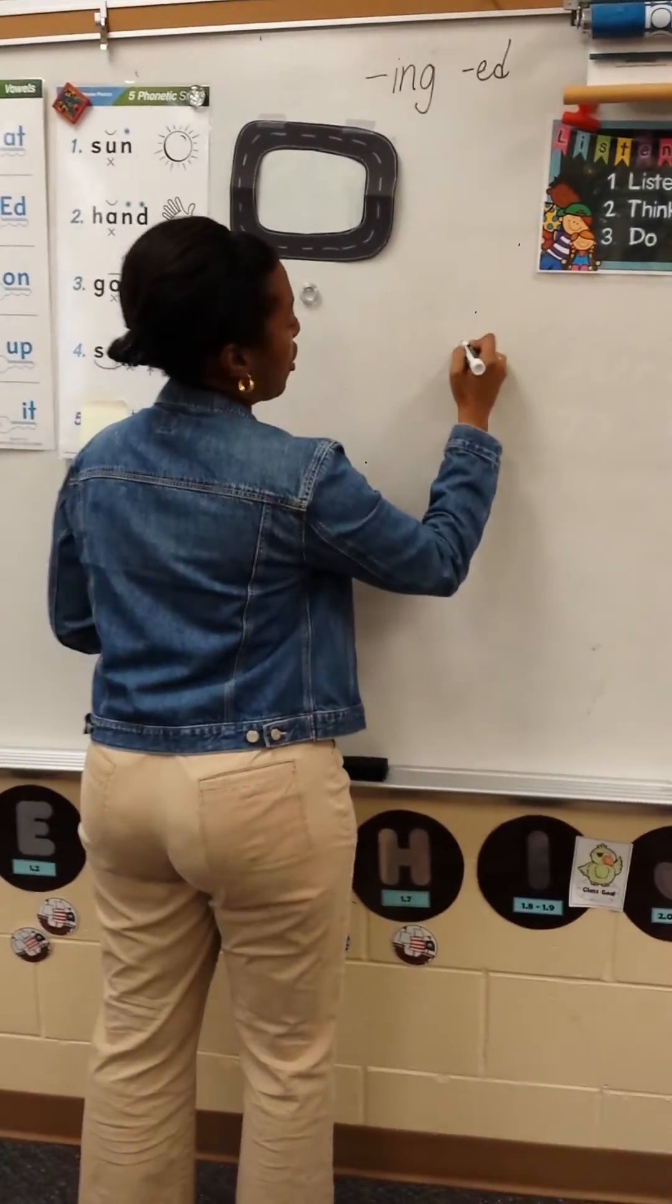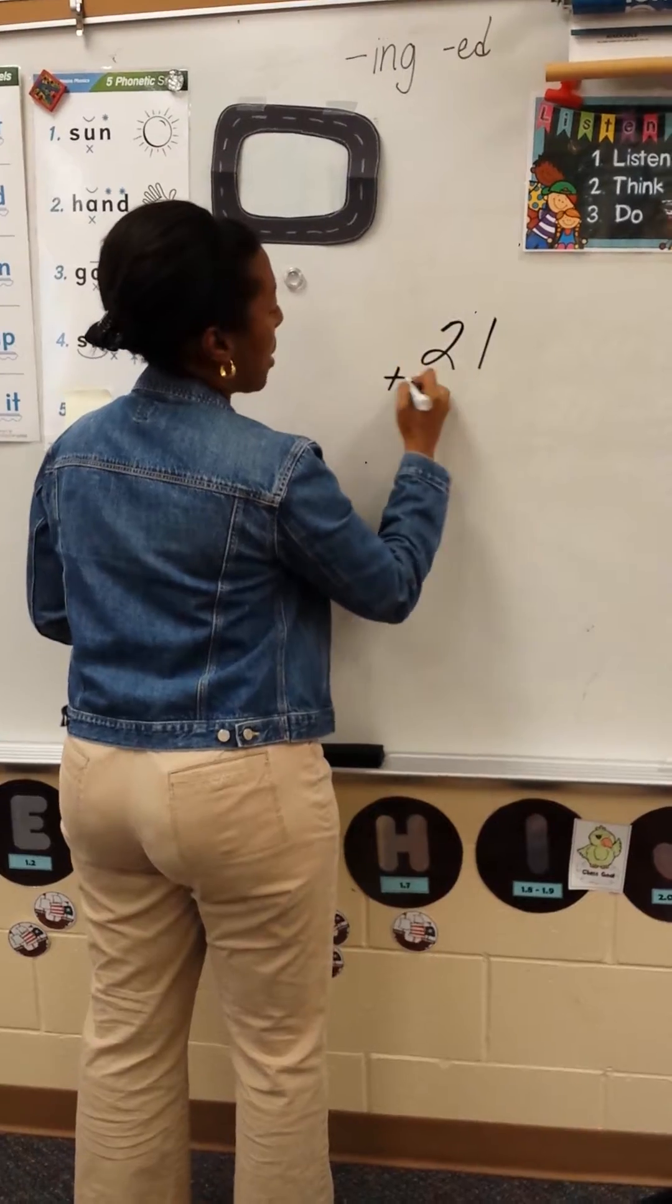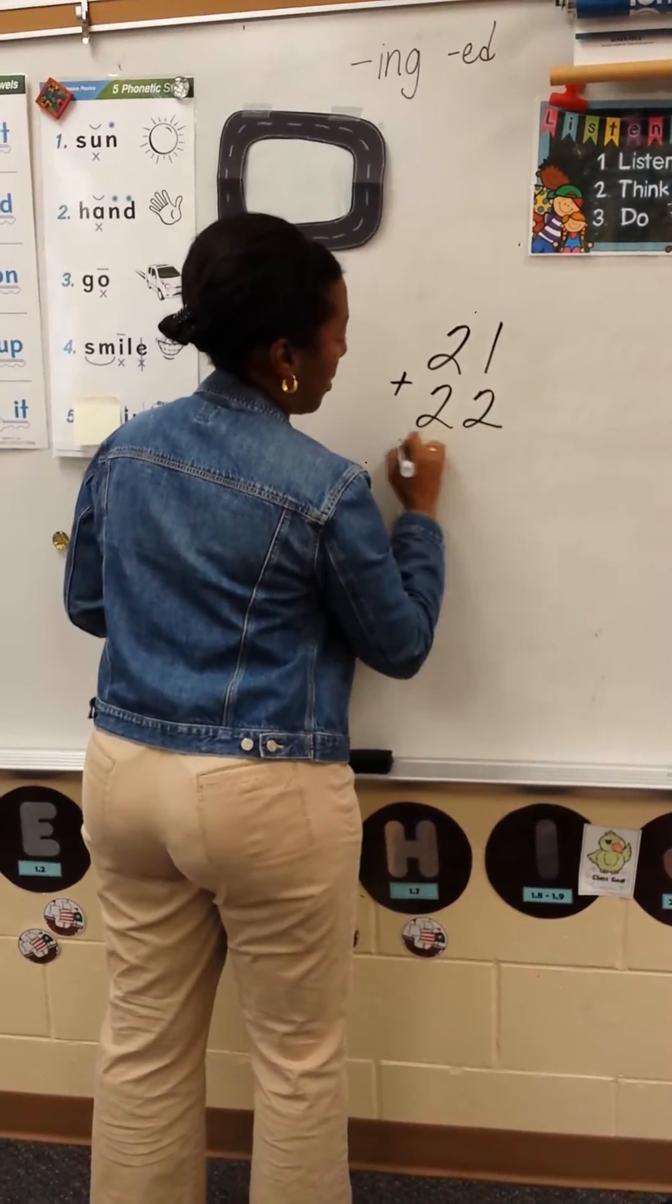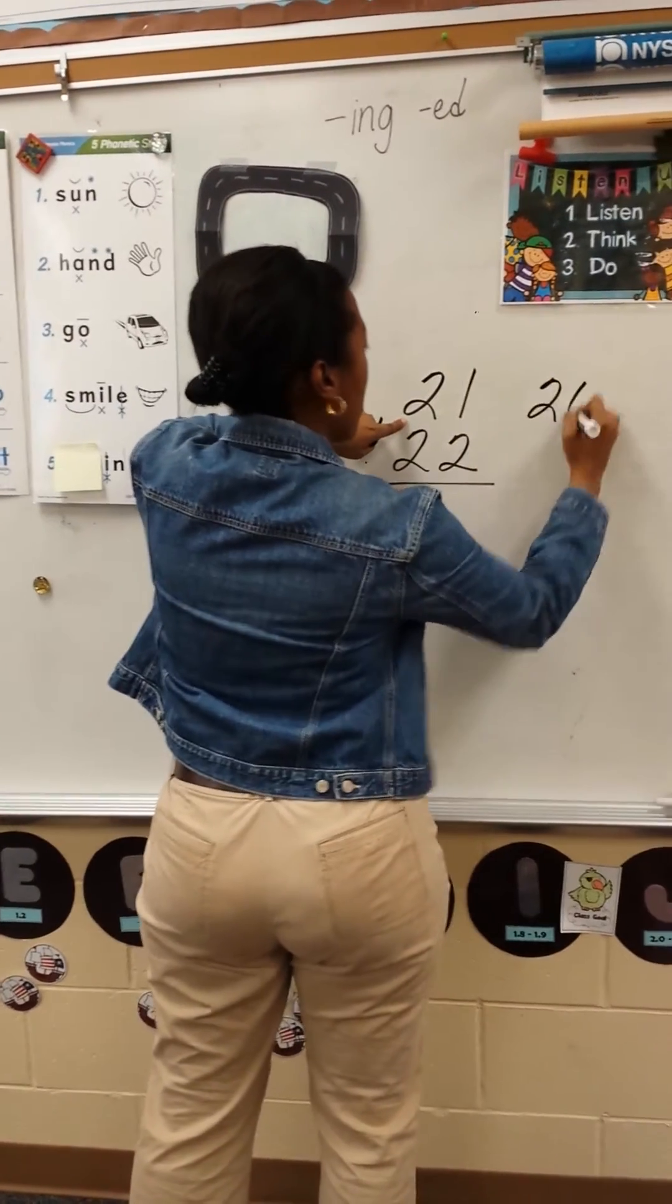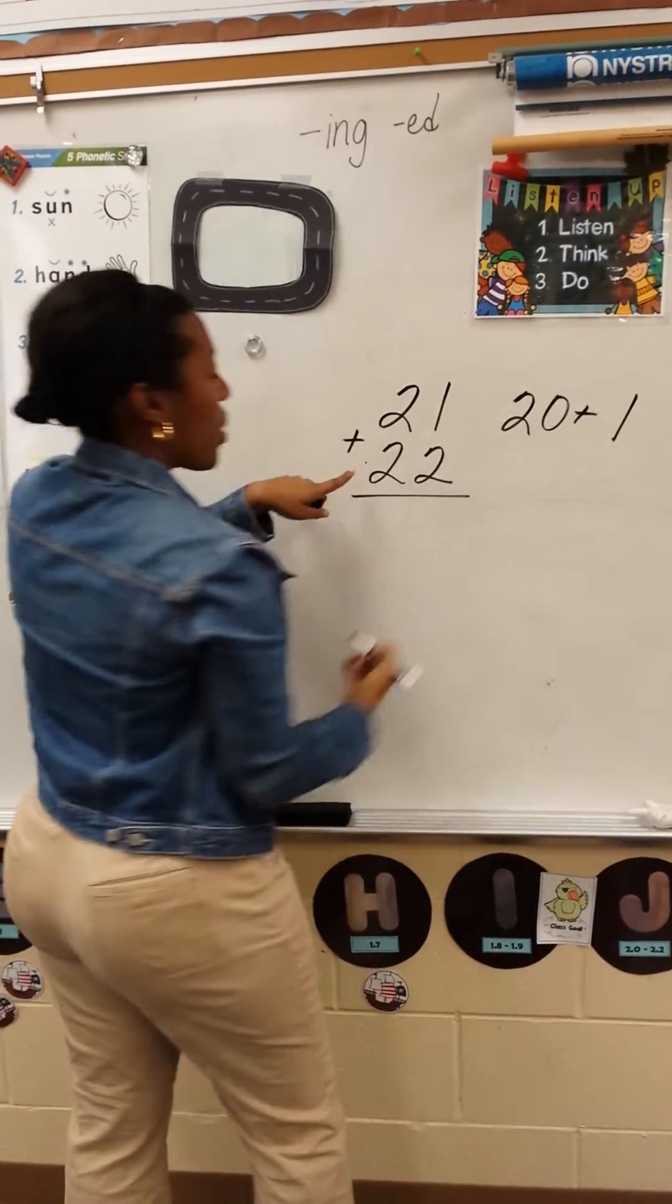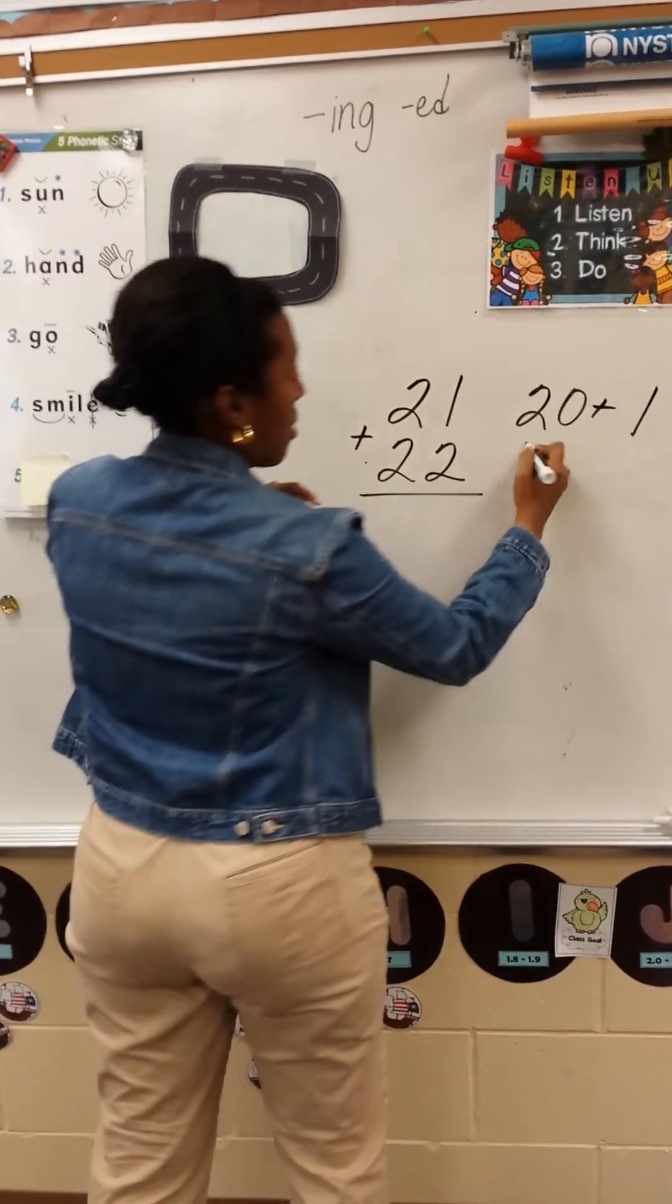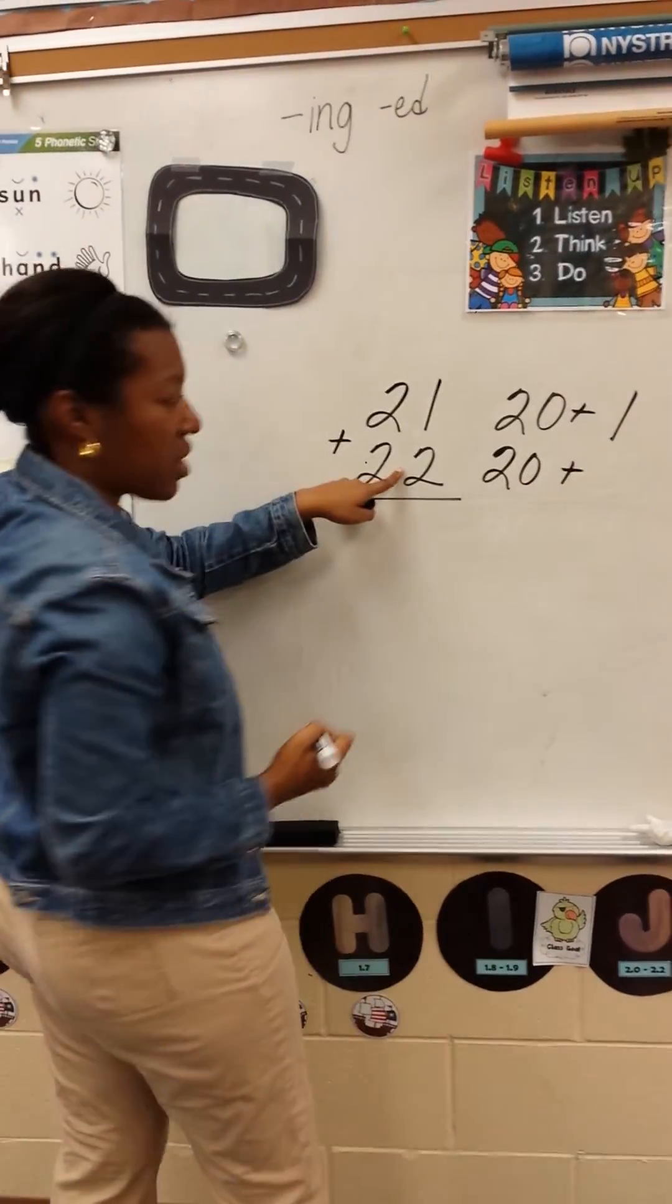So if I have, for example, 21 plus 22. What is the value of this digit, boys and girls? 20! The value of this digit? 1! What is the value of this digit? 20! What is the value of this digit? 2!